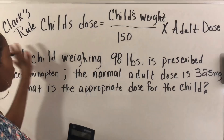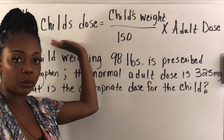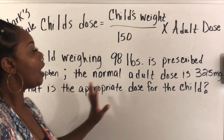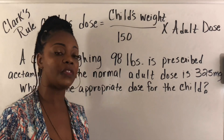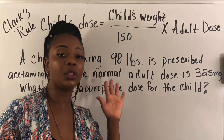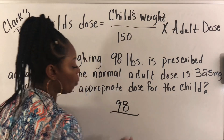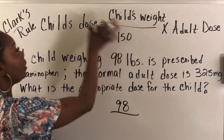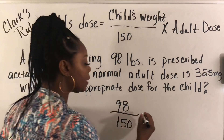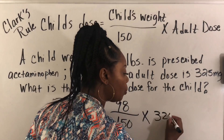Clark's Rule: child's weight divided by 150 times the adult dose — we are trying to get the child's dose. This problem says a child weighing 98 pounds is prescribed acetaminophen. The normal adult dose is 325 milligrams. What is the appropriate dose for the child? We'll work this out the same exact way as the previous four problems.